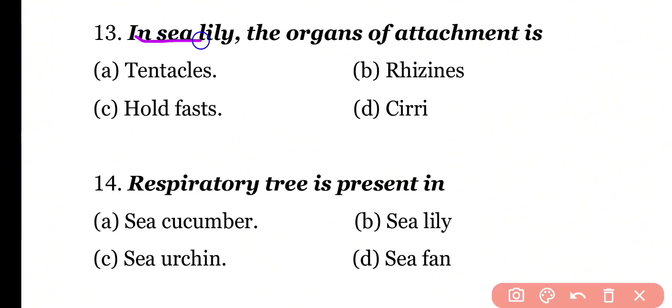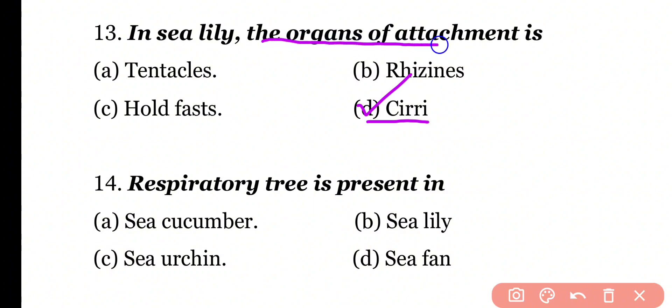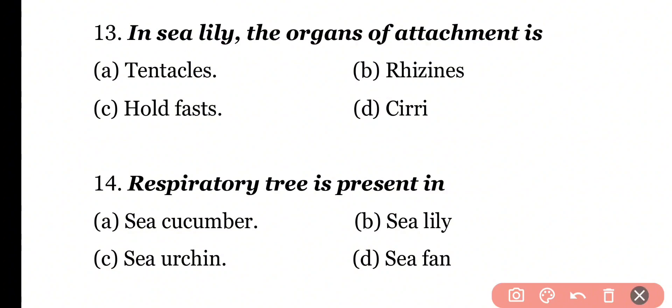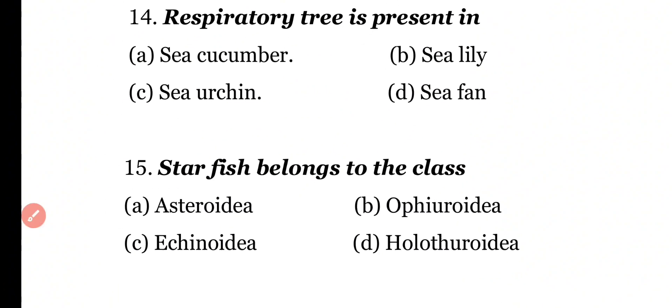Question 13: In sea lily, the organ of attachment is tentacles, rhizoids, holdfast, or cirri? Correct answer is Option D. Cirri (singular: cirrus) are the organs of attachment in sea lilies.